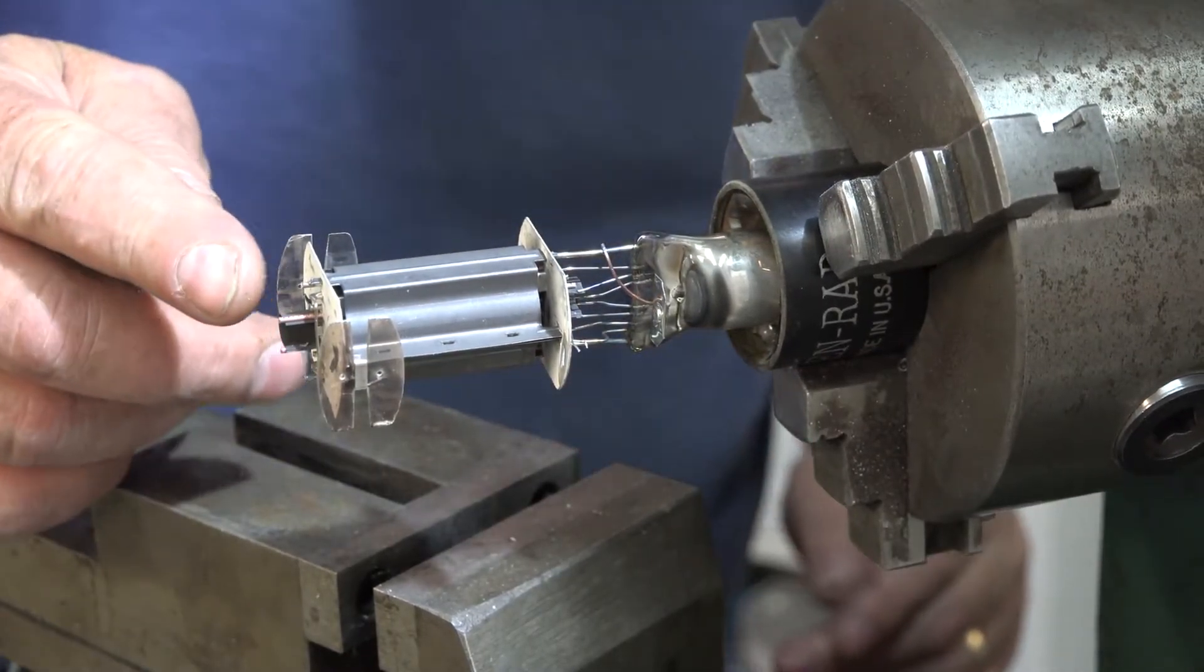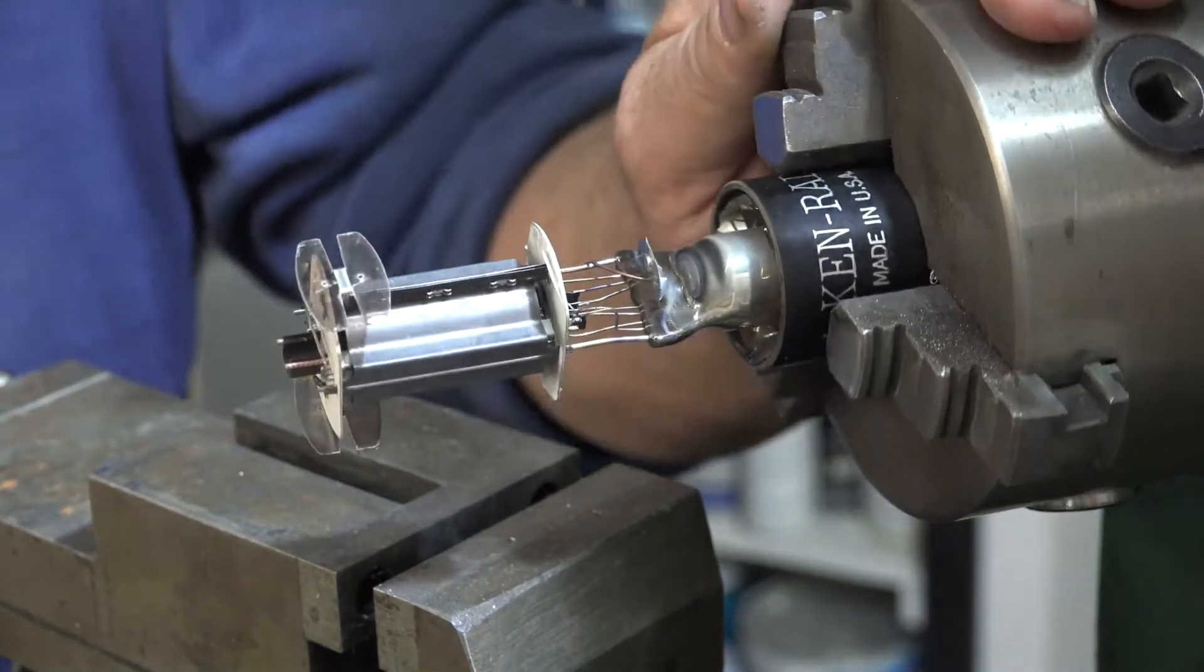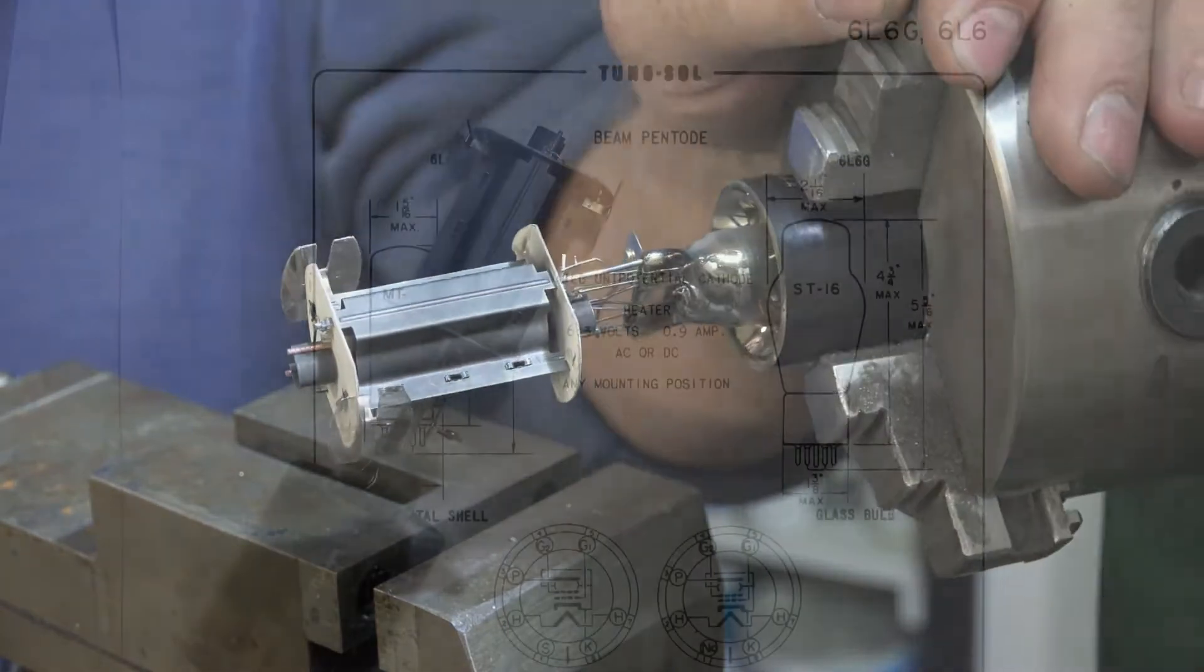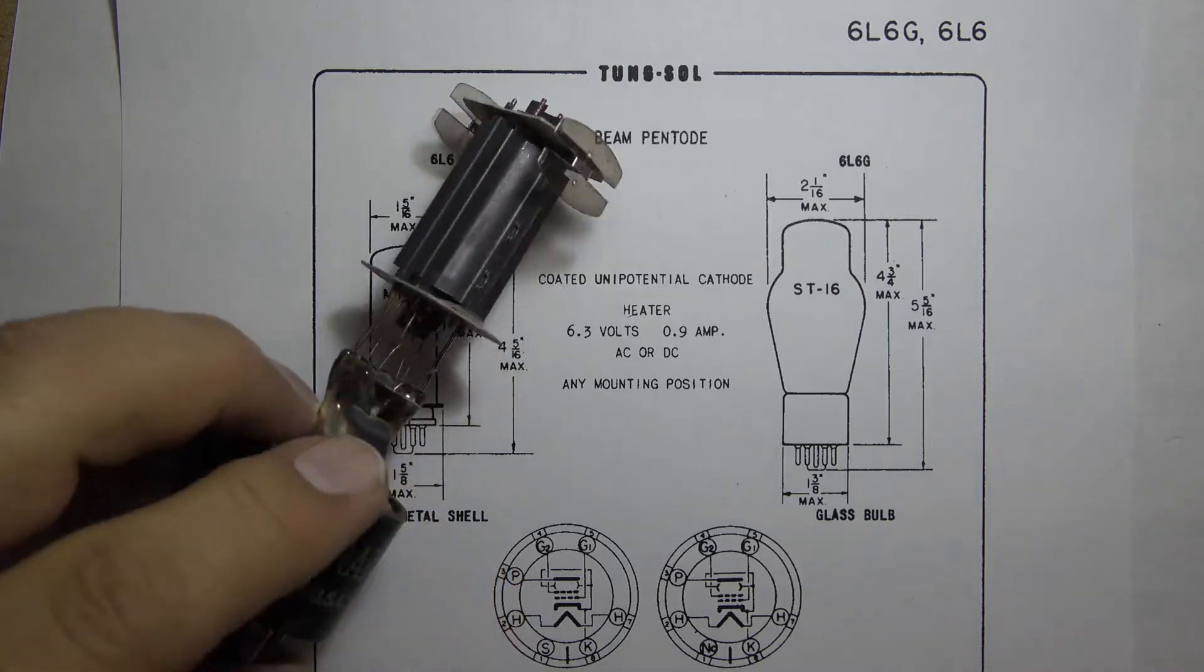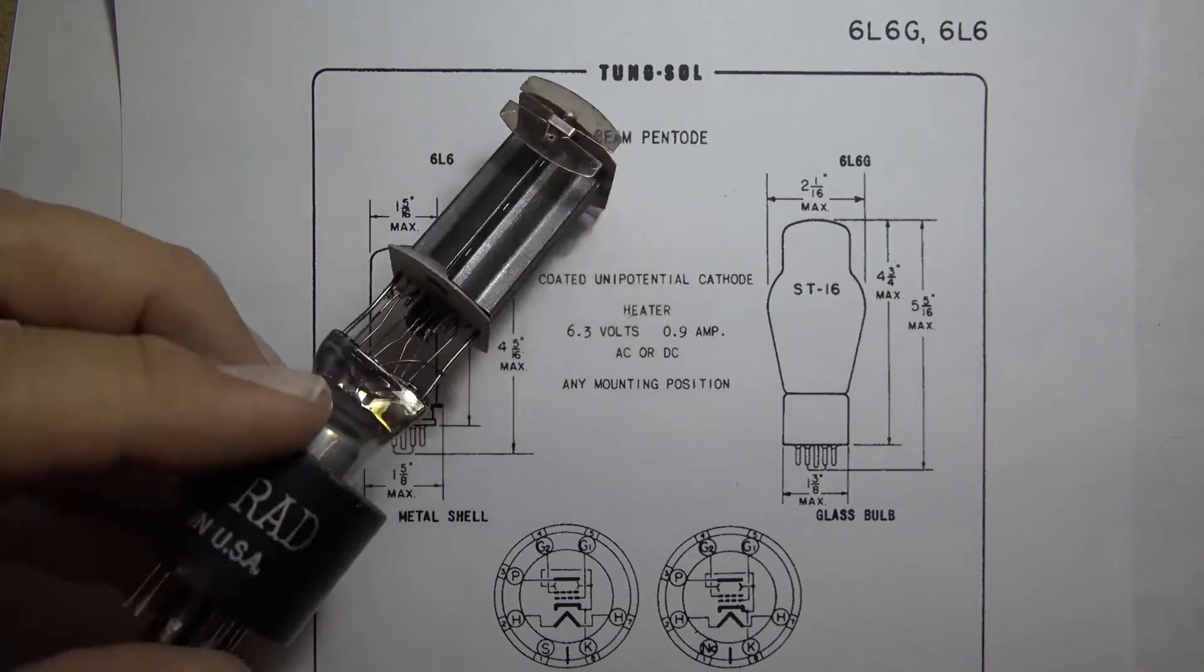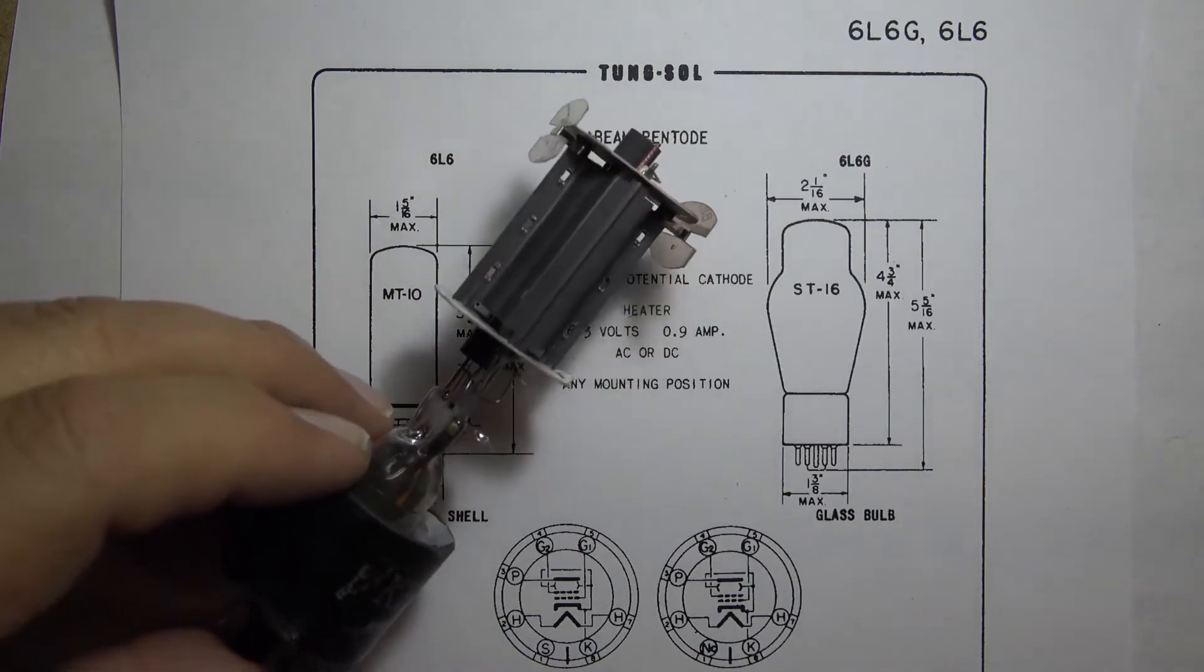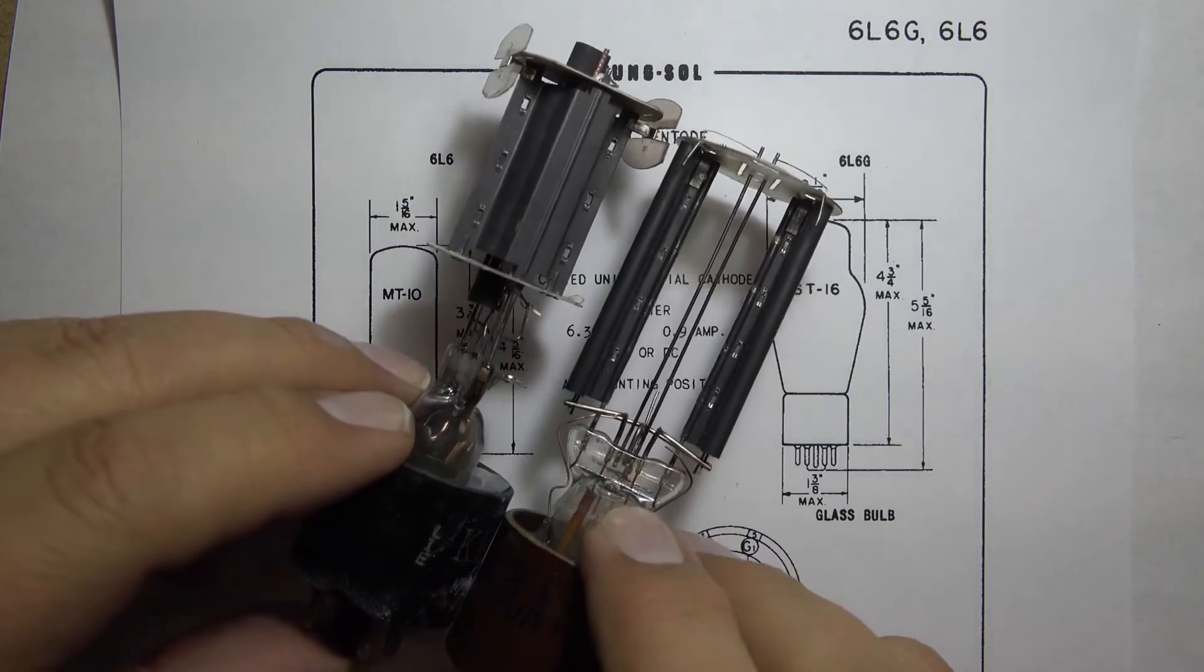We're taking apart a 6L6G version. It's got a plate dissipation of 19 watts. It's in that ST16 tube type. You can kind of see it's relatively the same size as our 5R4.